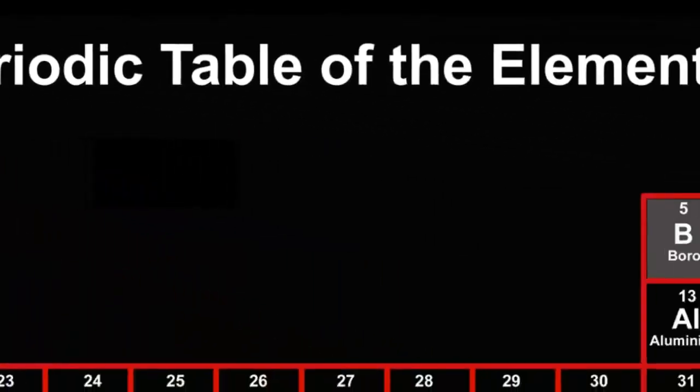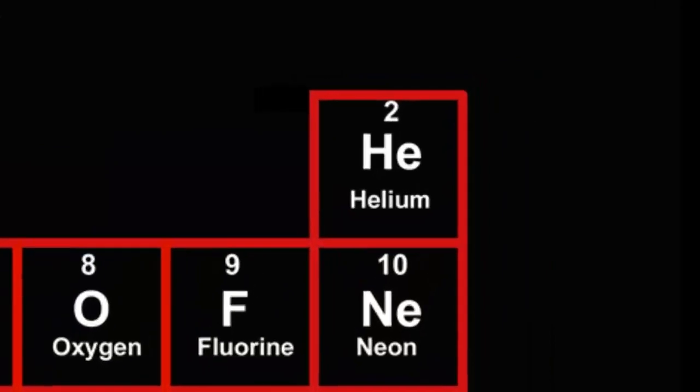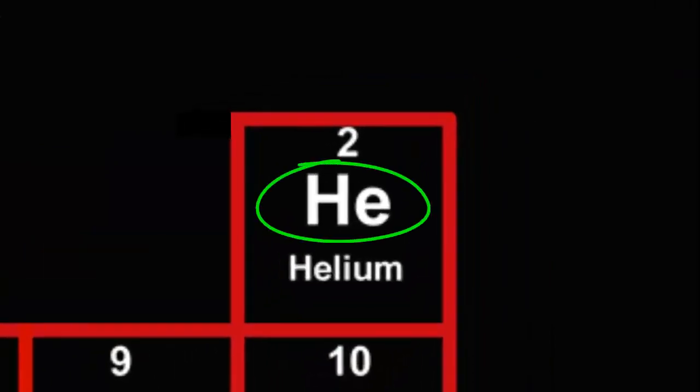Zooming into helium at the top right, we can see that its symbol is HE, big H little e, to make it a bit different to hydrogen's. And its atomic number is 2, being the second lightest element.